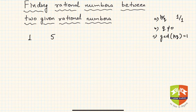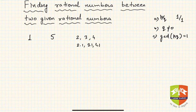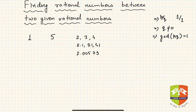For 1 and 5, it is a cakewalk. You can always say 2, 3, 4 are in between. 2.1, 3.1, 4.1 are also in between. Or 2.00579 is also in between 1 and 5. So you can actually find an infinite number of rational numbers between two given rational numbers.